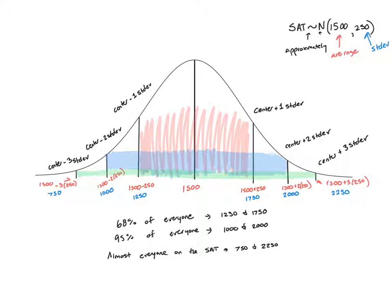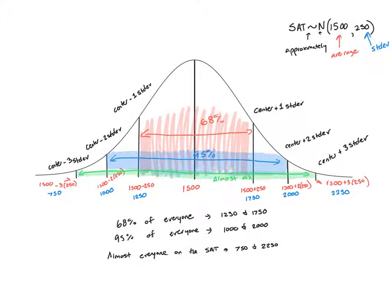Or if someone scored a 2400, that would also be really unusual. So once we know something is normally distributed: one standard deviation out on either side gives us the middle 68% of people; two standard deviations out gives us the middle 95%; and three standard deviations out covers almost all. Anyone below 750 or above 2250 could be considered a potential outlier.